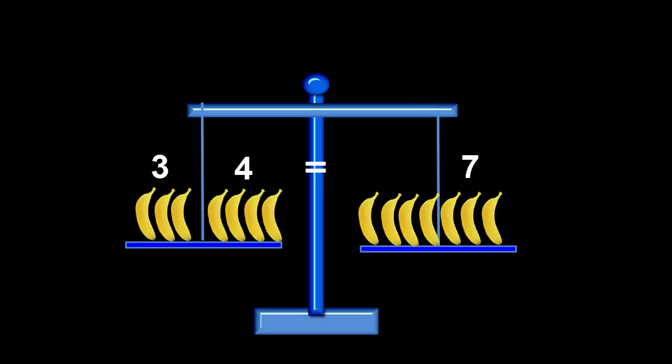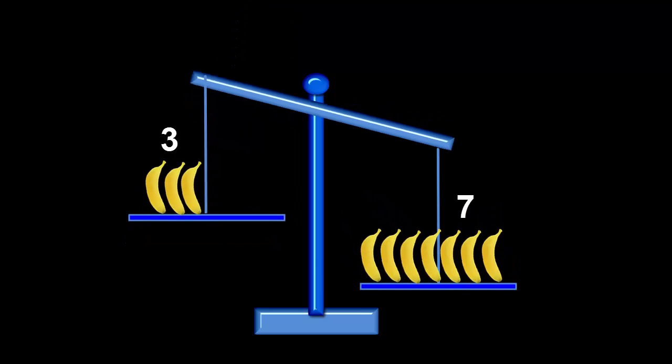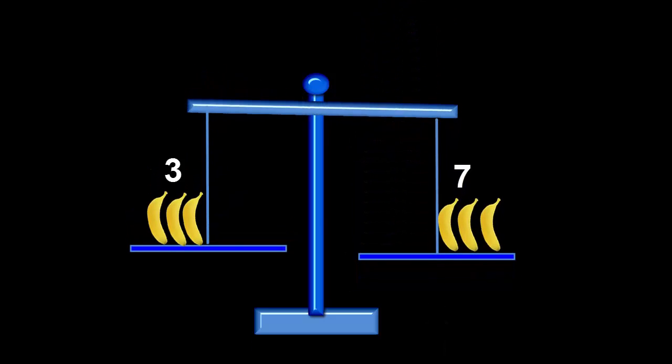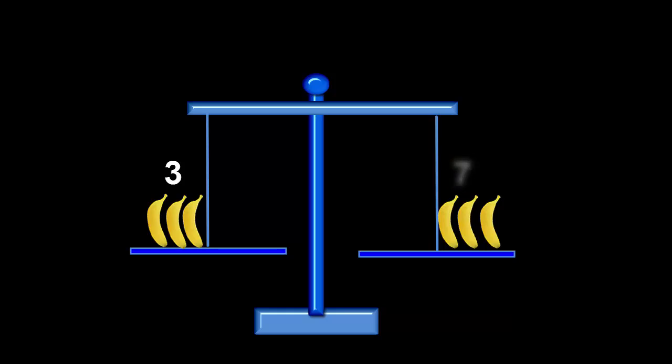Now we'll take Jack's four bananas off the left pan. The right pan now sinks because it's heavier. If you can only change the right pan's bananas, how could you make them equal again? By removing four bananas from the right pan as well. And it doesn't matter which four bananas you remove. Now the right pan has three bananas, same as the left pan, so it's an equation again.